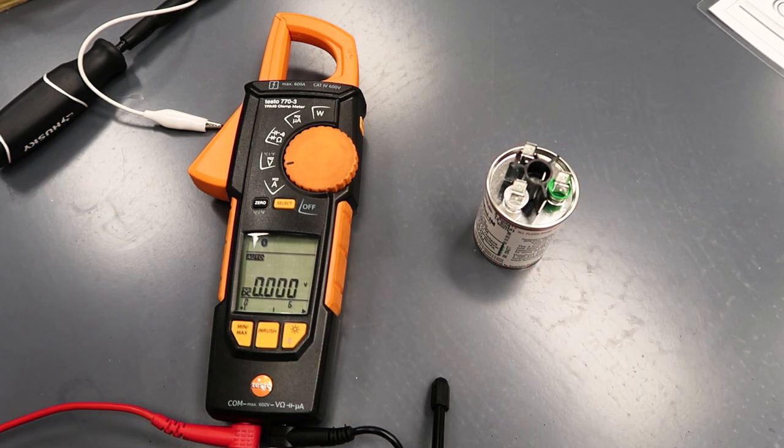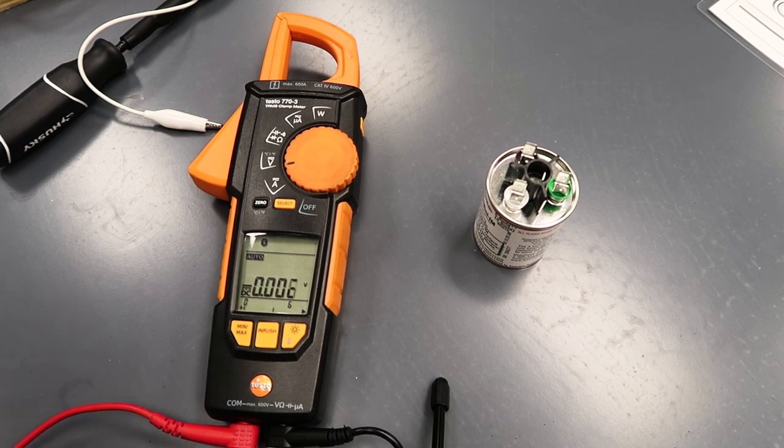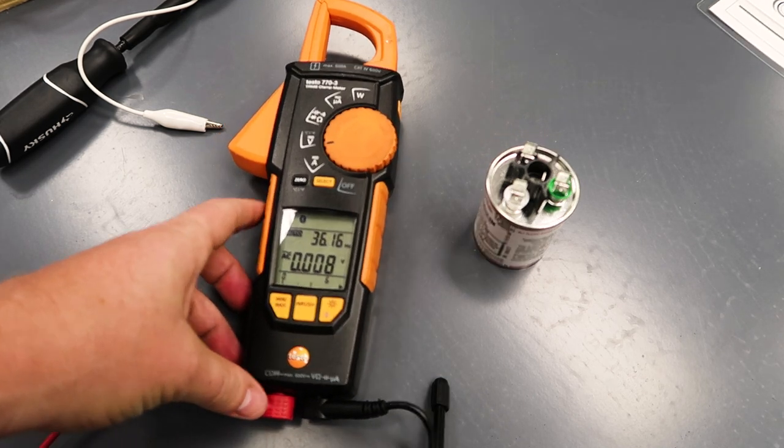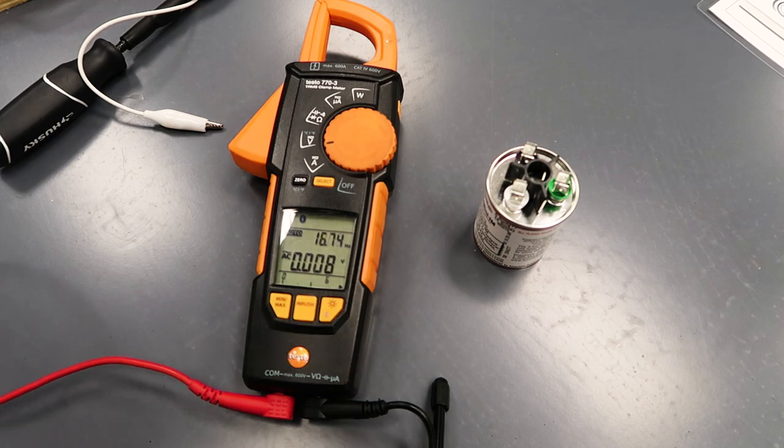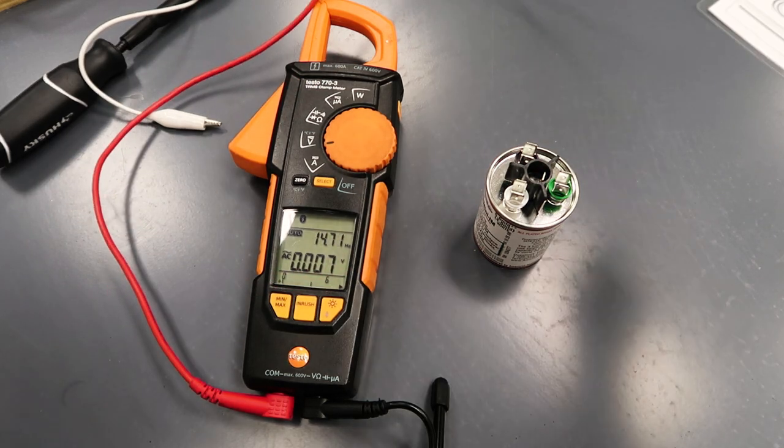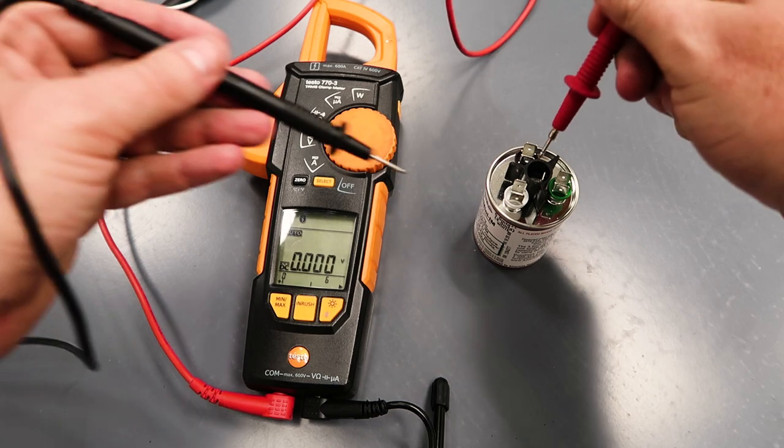And so we're going to see how long it takes to discharge with a meter. Because the theory is, the meter has a resistance through it, an impedance to the meter. And so the meter can act as a discharging device. So let's see what we get here.